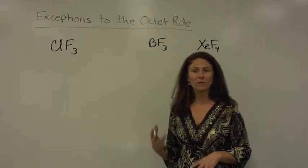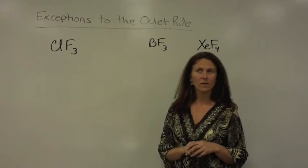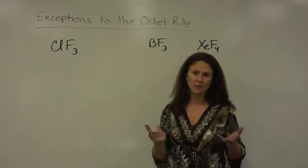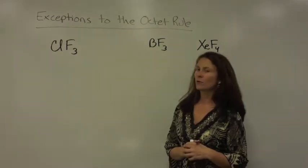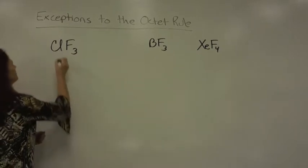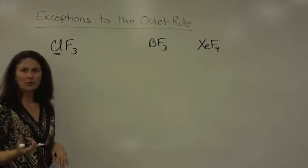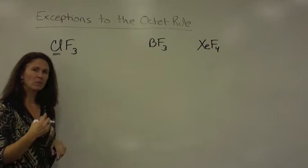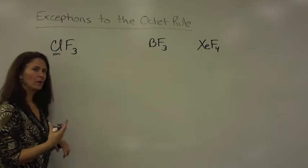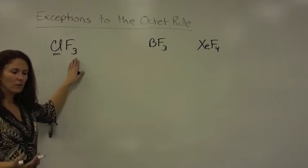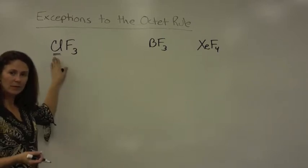Here we're actually going to draw out some of those exceptions to the octet rule. Remember, an atom can either hold more than an octet or less than an octet. If we look at ClF3, the first one listed is chlorine. Looking at chlorine, it has seven valence electrons. It only needs to form one bond, but then you have three fluorine atoms that are trying to bond to it. Let's start with chlorine in the middle.